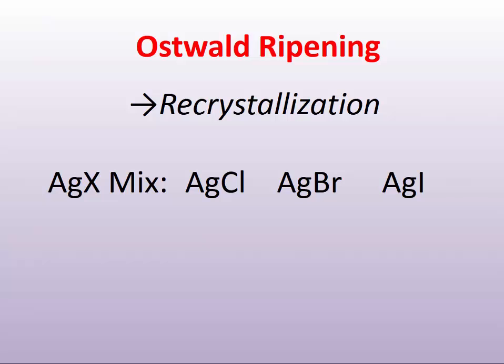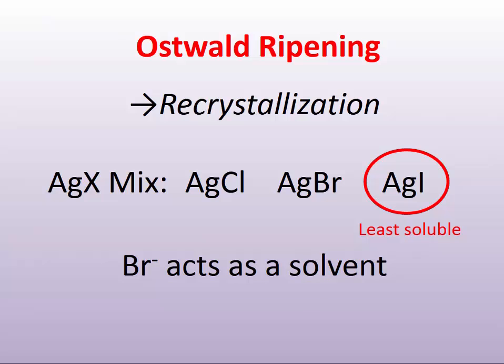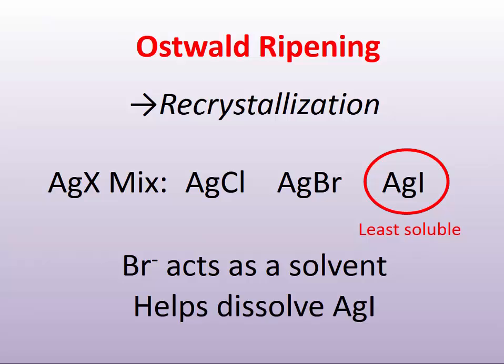Going back to our knowledge of the chemical properties of silver halides, we know that silver iodide is the least soluble. During the crystal growth process, silver iodide would form first in a greater proportion. Through the Ostwald ripening process, the smaller grains would redissolve, and with bromide present, bromide would act as a solvent — this is not the last time we'll hear about bromide ion acting as a silver grain solvent. Bromide would help dissolve the silver iodide present; the iodide dissolves, and bromide, being a much more reactive halide ion, takes its place. But because iodide is much less soluble, it would also fill back into the crystal.